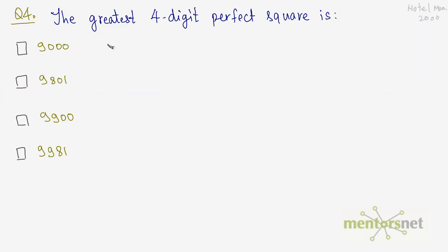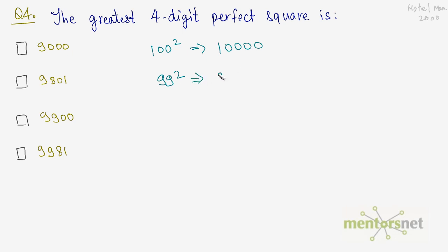Question 4: find the greatest 4-digit perfect square. The square of 100 is 10,000, which is a 5-digit number, so the answer must come from a number less than 100. The square of 99 is 9801, so the greatest 4-digit perfect square is 9801.